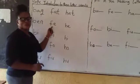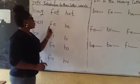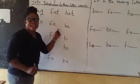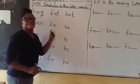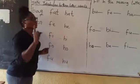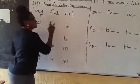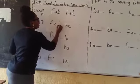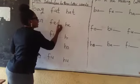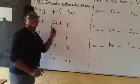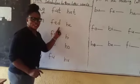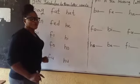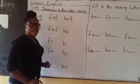Now let's go to fe. To blend this word we have fe. Again. Fe. Now let's use another consonant — d. Da. Then we fix it here. It becomes the word fed. Again. Fed.